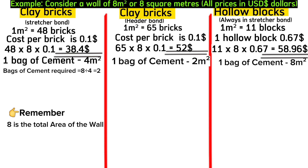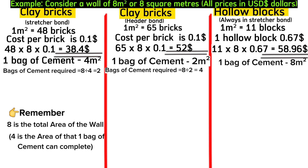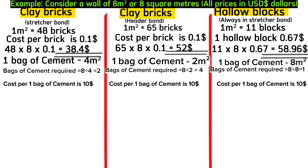To complete our eight square meter wall: 8÷4 = 2 bags of cement for stretcher bond, 8÷2 = 4 bags for header bond, and 8÷8 = 1 bag for hollow blocks. At $10 per bag, that is $20 for stretcher bond, $40 for header bond, and $10 for hollow blocks.